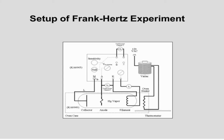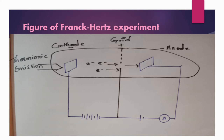Working of the Frank-Hertz Experiment: An electron beam is produced by thermionic emission from a filament. The electrons are accelerated, pass through the mercury vapor, and are then retarded by a few volts before reaching the anode. Regarding how temperature affects the Frank-Hertz experiment: electrons are accelerated through mercury vapor and undergo inelastic collisions. The dependence of the Frank-Hertz curve on tube temperature shows a decrease in average peak spacing with increased temperature.